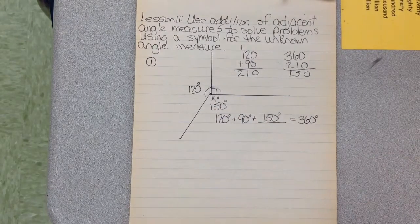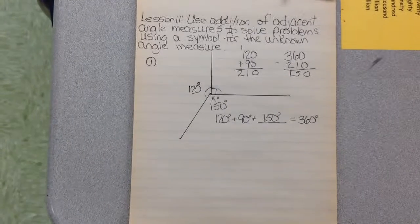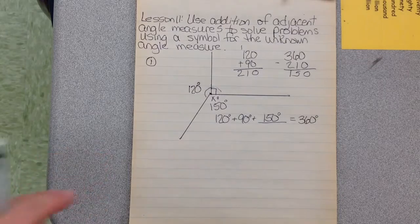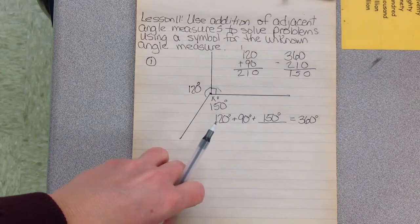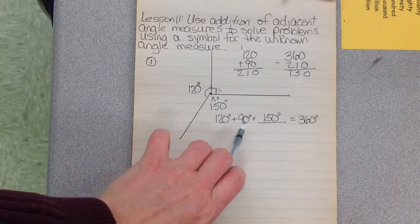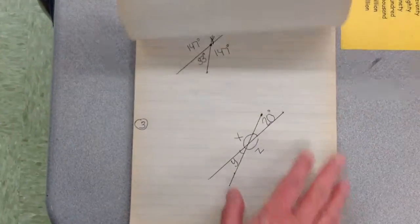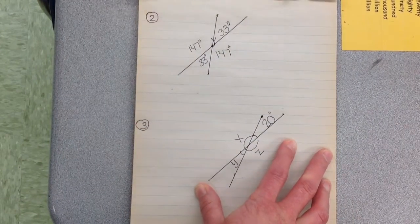If you look that makes sense, 150. You can go through and verify with a protractor, but when you know two of the three angles you can simply use addition and subtraction. So in this case 120, 90, and 150 is how 360 was decomposed. Let's look at the next one.